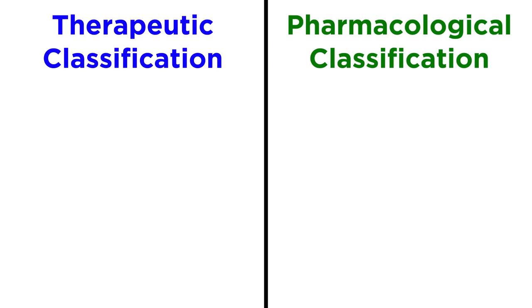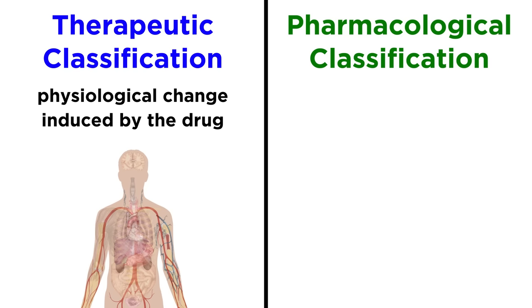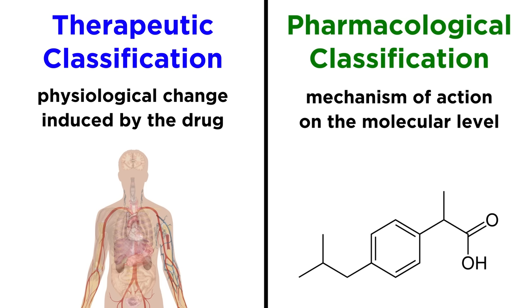The main distinction we want to make is the difference between therapeutic classification and pharmacological classification. The first of these describes the purpose of the drug, or essentially the main physiological change that is induced by the drug on the organismal level. The second of these describes the mechanism of action, or what the drug does on the molecular level. Let's go through some examples of each.